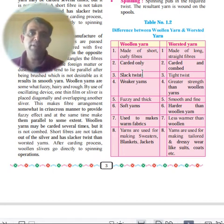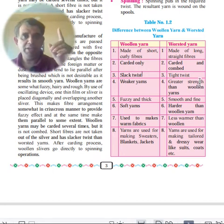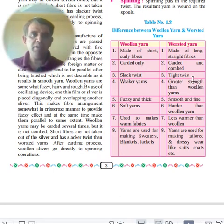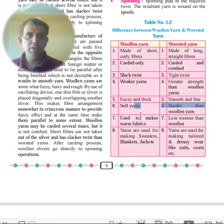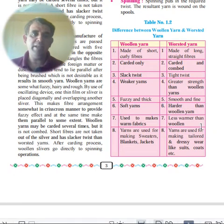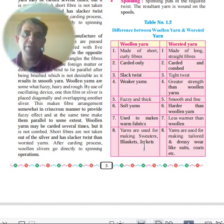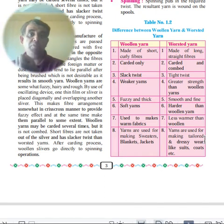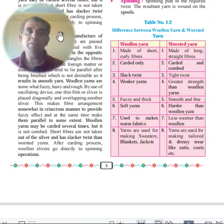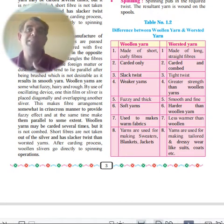Comparing woolen and worsted yarns: woolen has a slack twist and the yarn is weaker, fuzzy, and thick — used to make warm items like sweaters. Worsted has a tight twist and produces smooth, soft, harder yarns that are less warm — used to make dresses and formal garments.